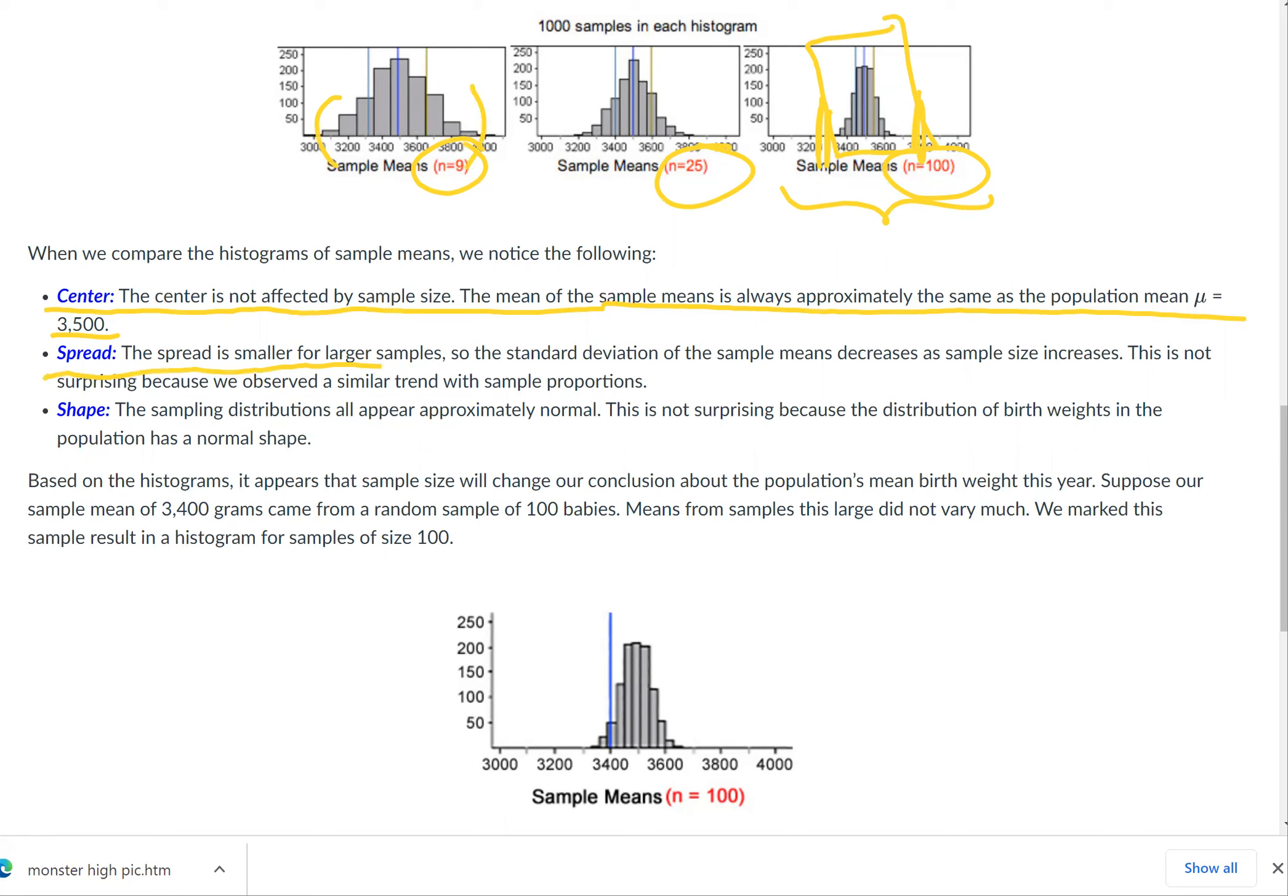...and then somewhere in between for the n of 25. So the standard deviation of the sample means decreases as sample sizes increase. This is not surprising because we observed a similar trend with sample proportions.